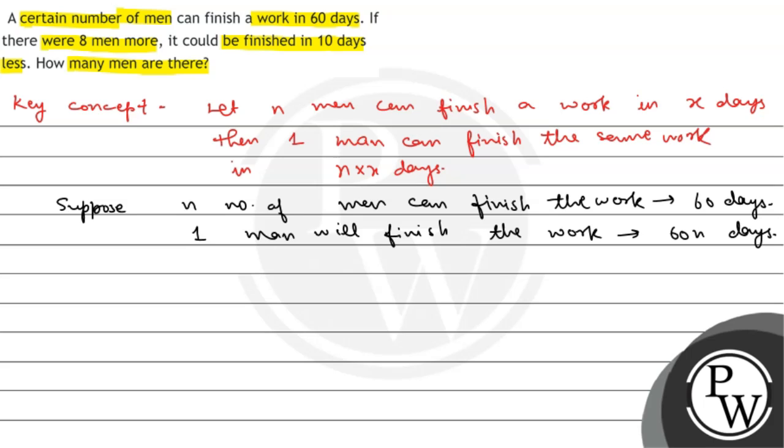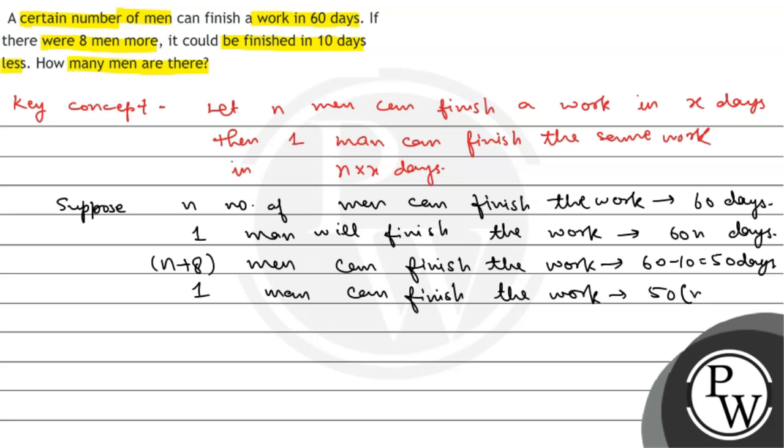Now, we have given that if 8 people are more, then that work can be done in 10 days less. That means, if we have n plus 8 men, they can finish the work in 60 minus 10 equals 50 days. So, one man can finish the same work in 50 into n plus 8 days.